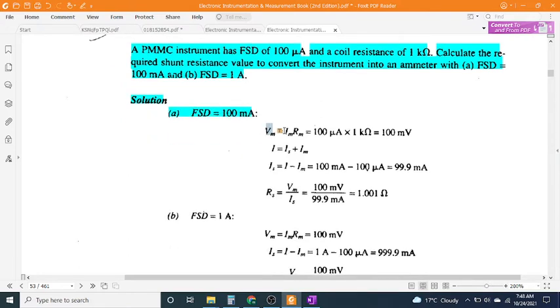Solution part A, FSD = 100 mA: V_M = I_M × R_M = 100 μA × 1 kΩ = 100 mV. I_S = I - I_M = 100 mA - 100 μA = 99.9 mA. R_S = V_M / I_S = 100 mV / 99.9 mA = 1.001Ω.